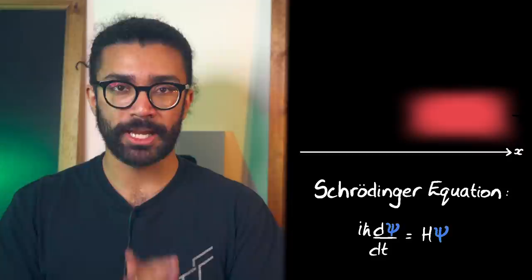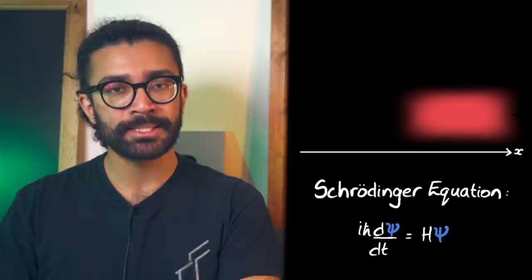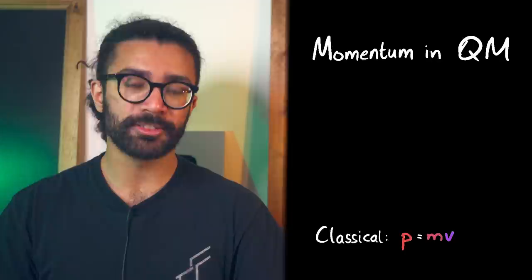The thing that I really want to focus on in this video, though, is how we mathematically encode momentum in quantum mechanics. In classical physics, it's easy – mass of object multiplied by its velocity. But in quantum physics, the maths primarily deals with wave functions. So where does momentum come into the picture?